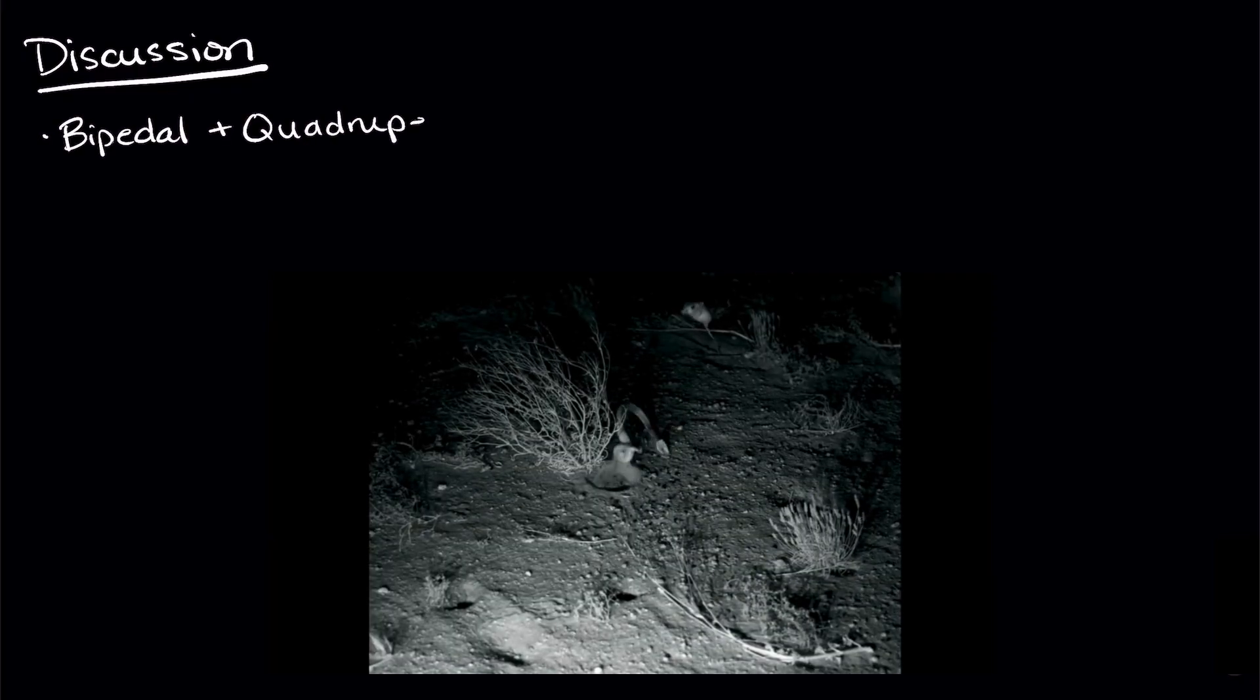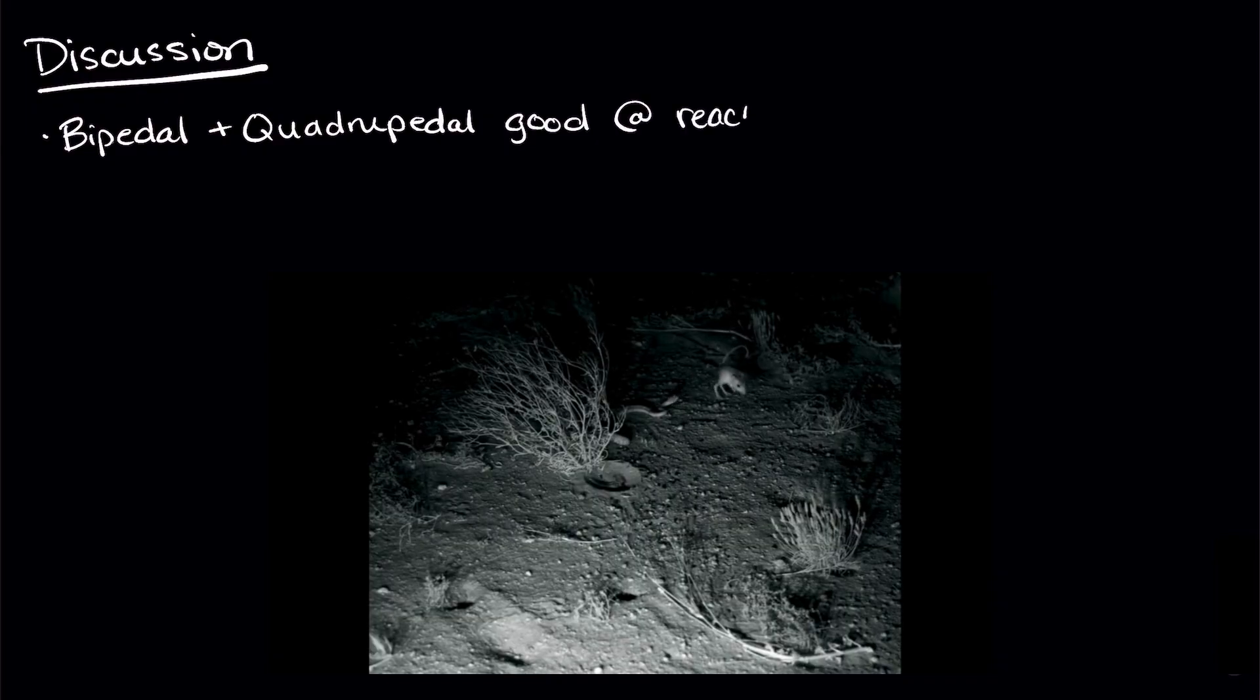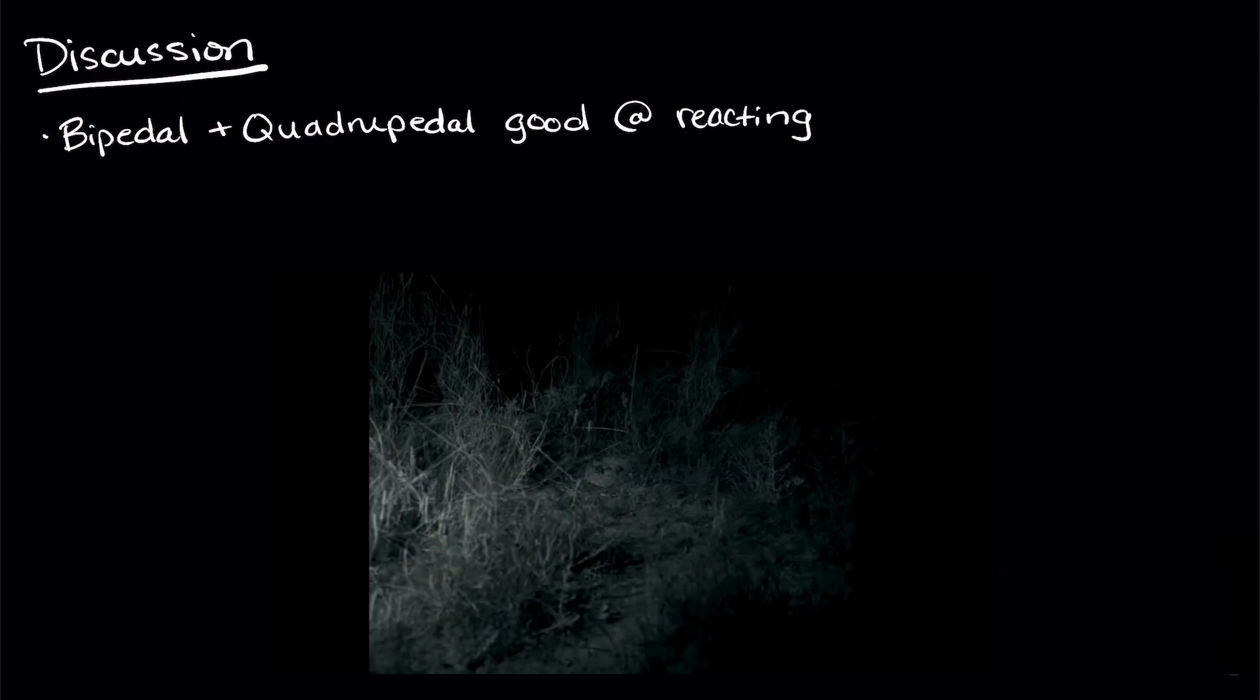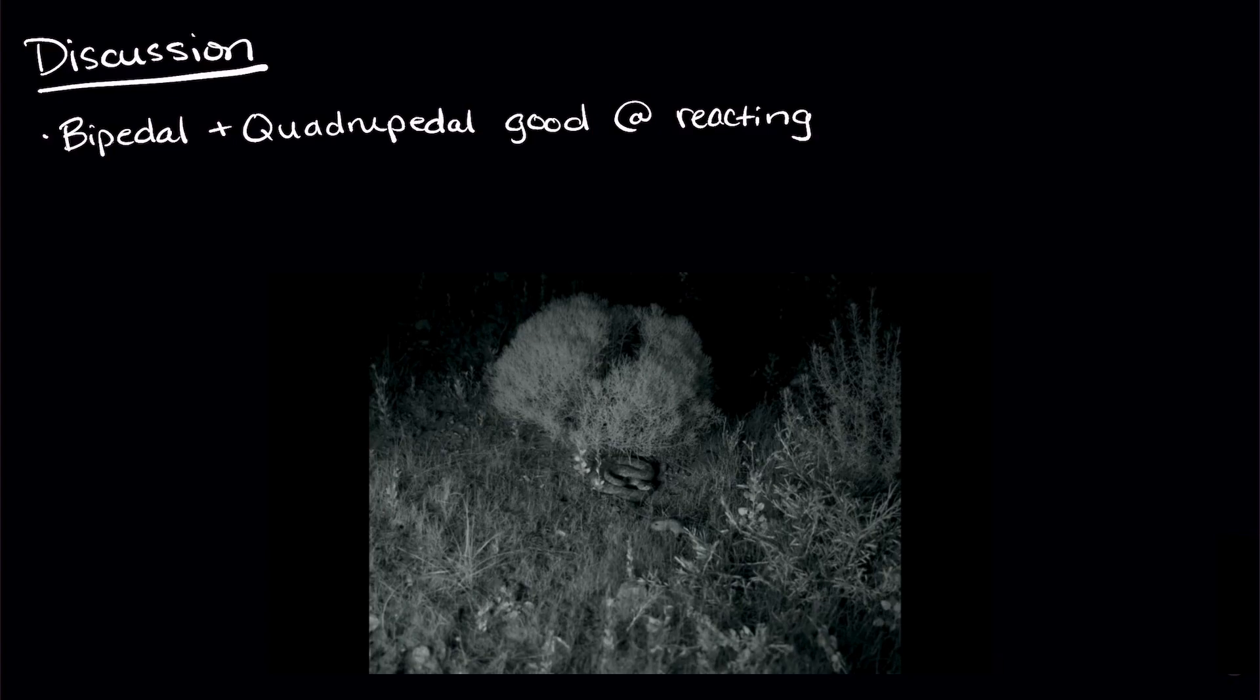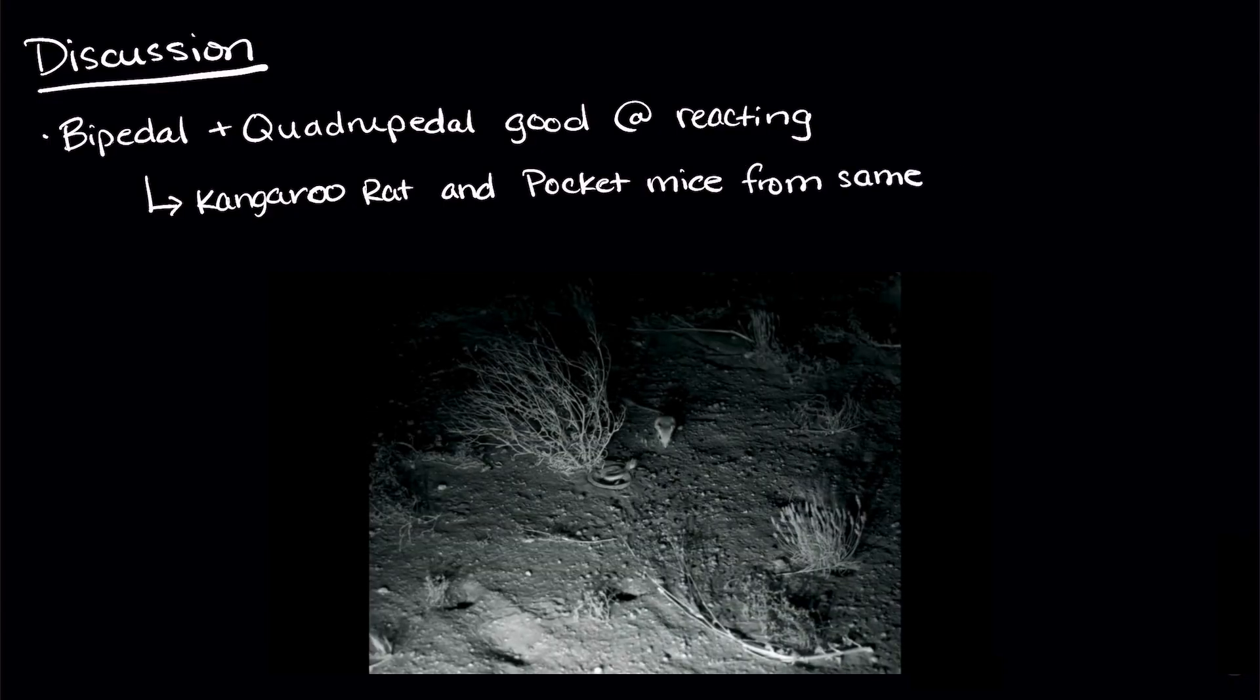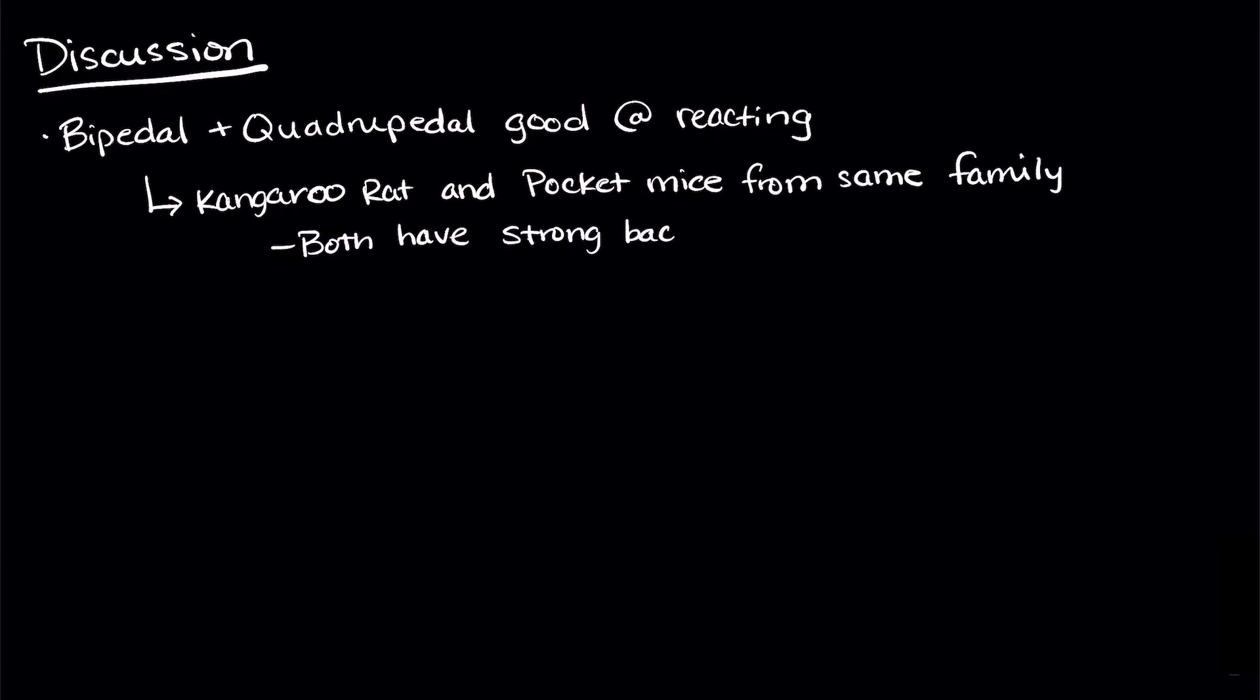Now let's discuss. What does all this mean if you were a rodent in the desert? Well, bipedal kangaroo rats were good at reacting to a potential threat, but so were the quadrupedal pocket mice. A rodent might not need to be bipedal to jump away from a predator quickly. And this makes sense because kangaroo rats and pocket mice are in the same rodent family. They both have strong back legs to help them jump away from predators, even though one is bipedal and the other is quadrupedal. They also have really good ears, which means that they may be able to respond more quickly than the other rodents in the study.